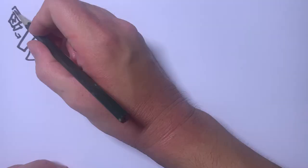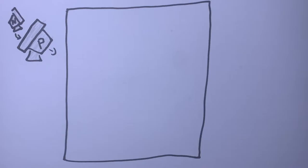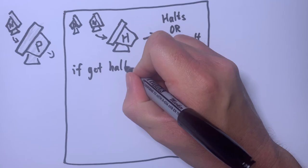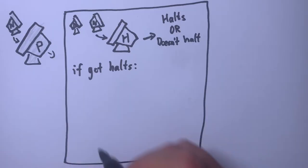Then, we can write a computer program P like this. The program P takes in the input N. Use H to check if N halts when we pass its source code into itself. Since H exists and always halts, this will always work. If N halts, run forever. If N doesn't halt, end the program.